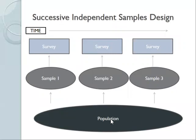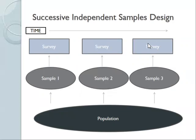The problem is we don't know how specific individuals' views have changed because different people are answering each time. The successive samples may not be representative of the same population — if one survey samples people in New England and the next samples people in Texas, opinions may appear to have changed when really the samples just weren't comparable.